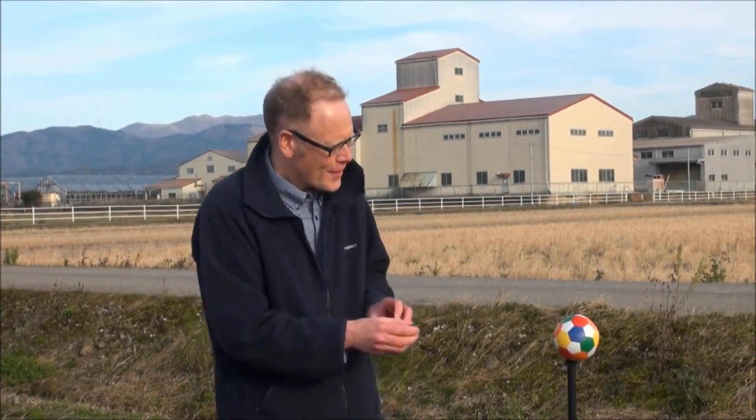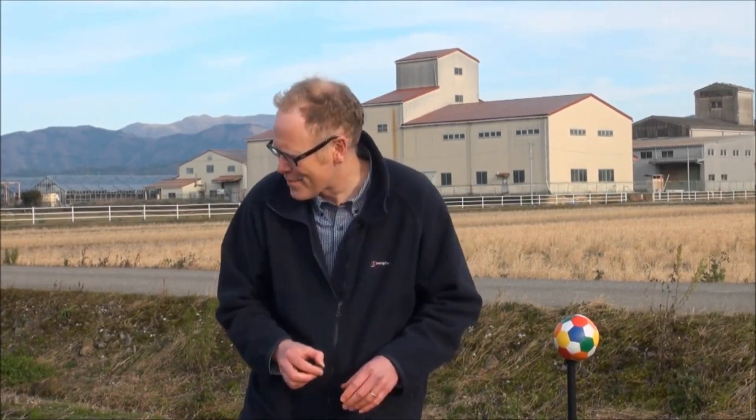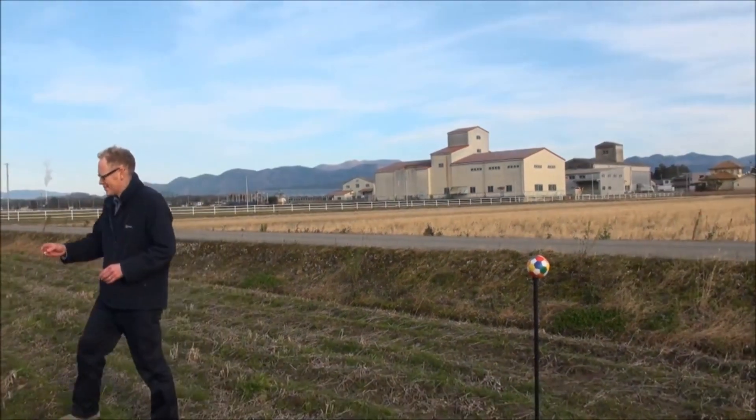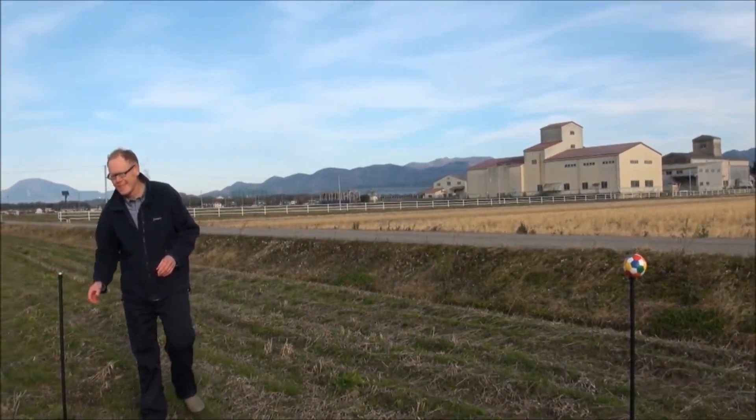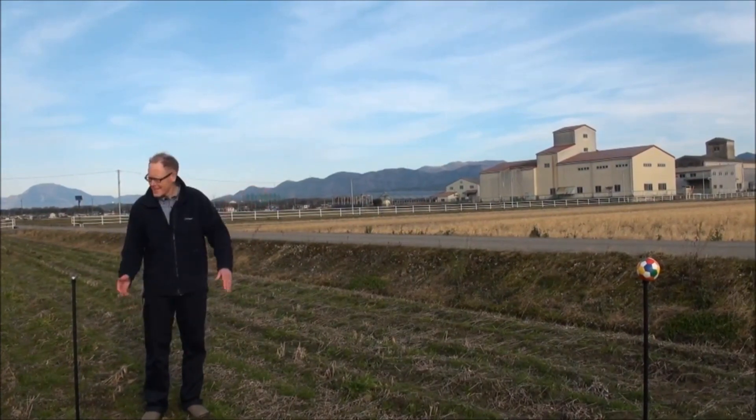Now the question is, on the same scale, what is the distance between these two objects? It's not ten centimeters. It's not twenty centimeters. It's not thirty centimeters. It is three meters. This is the distance between the Earth and the Moon.